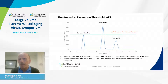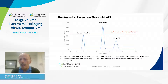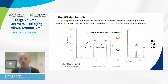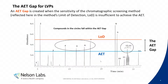Every peak above the line has to be reported for tox assessment; every peak below the line is presumed to be safe. Here's the problem with LVPs: the AET is so low, drawn so far down in the chromatogram, that many analytical techniques routinely used for screening can't get that low — the limit of detection isn't as low as the AET.